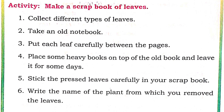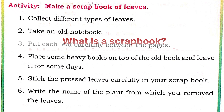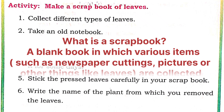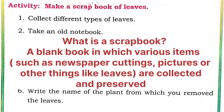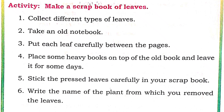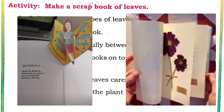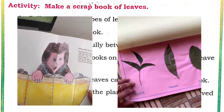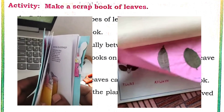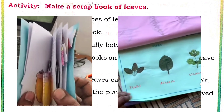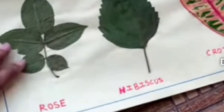Make a scrapbook of leaves. What is a scrapbook? A blank book in which various items such as newspaper cuttings, pictures, or other things like leaves are collected and preserved. Examples of scrapbooks are shown.